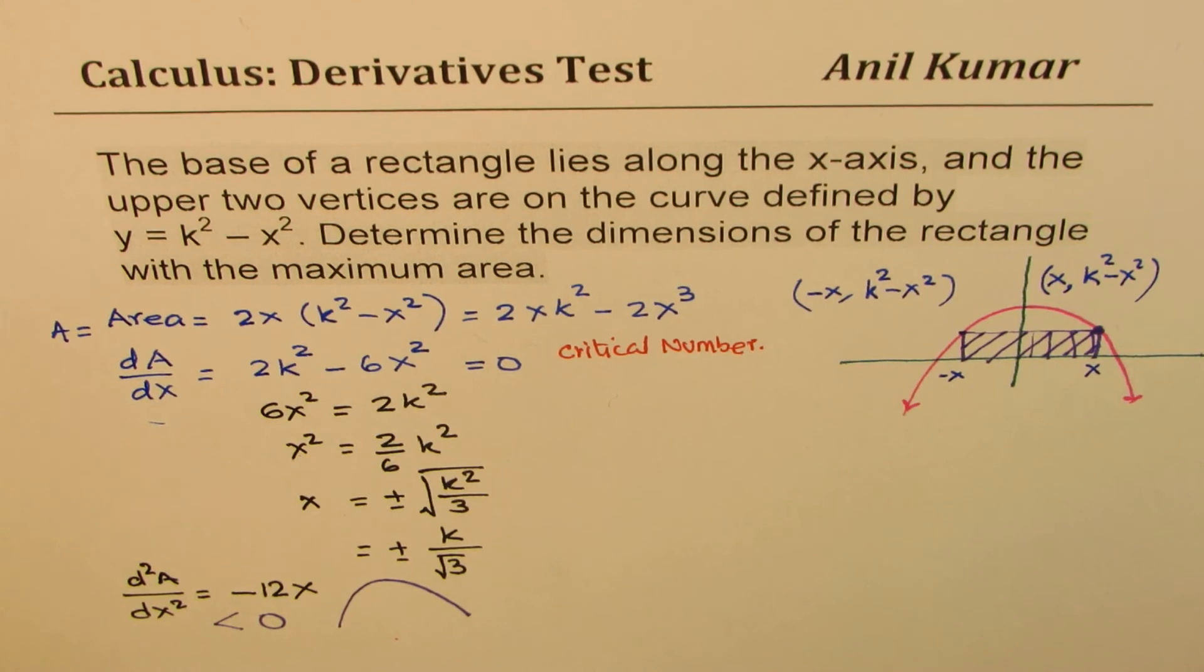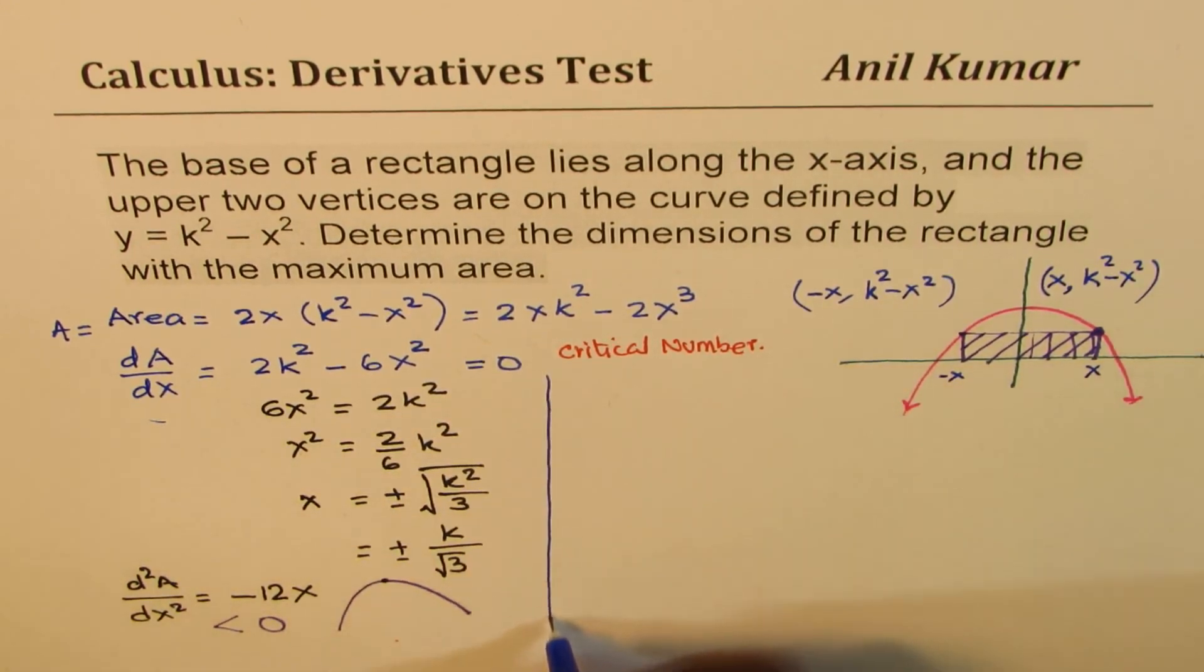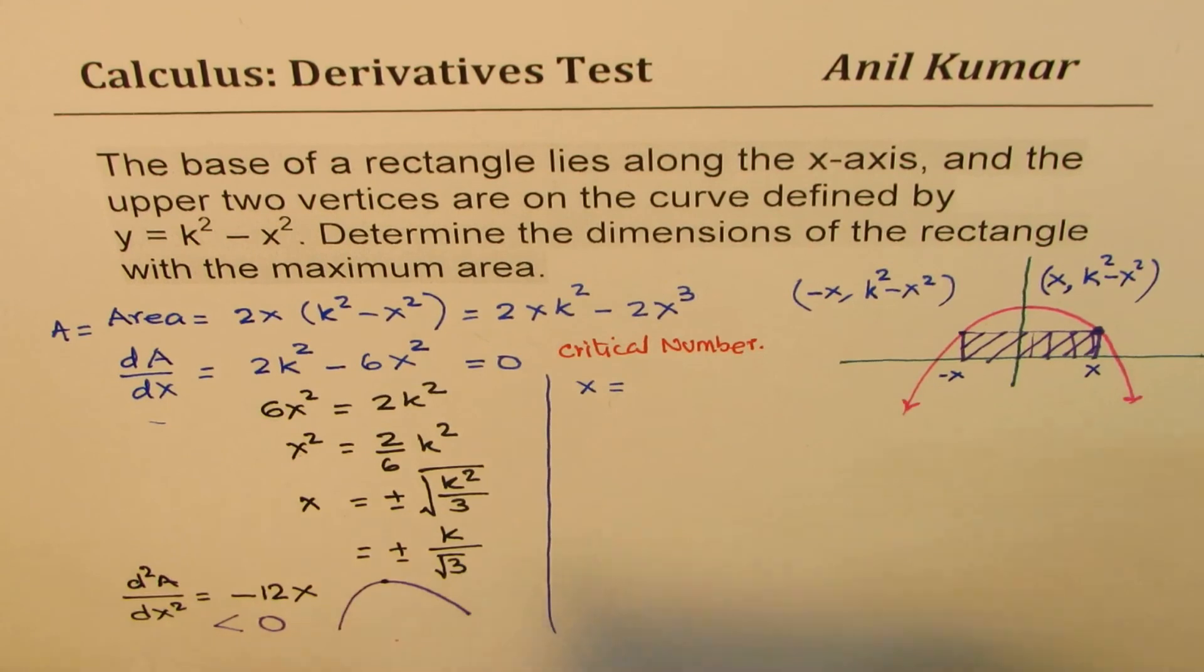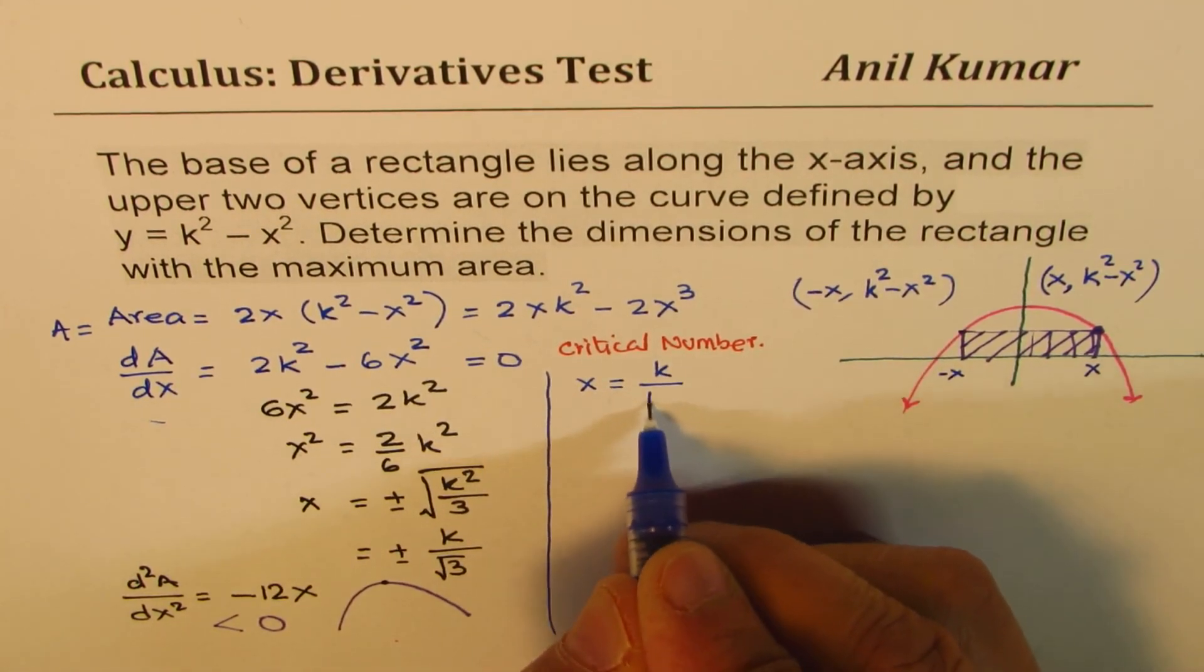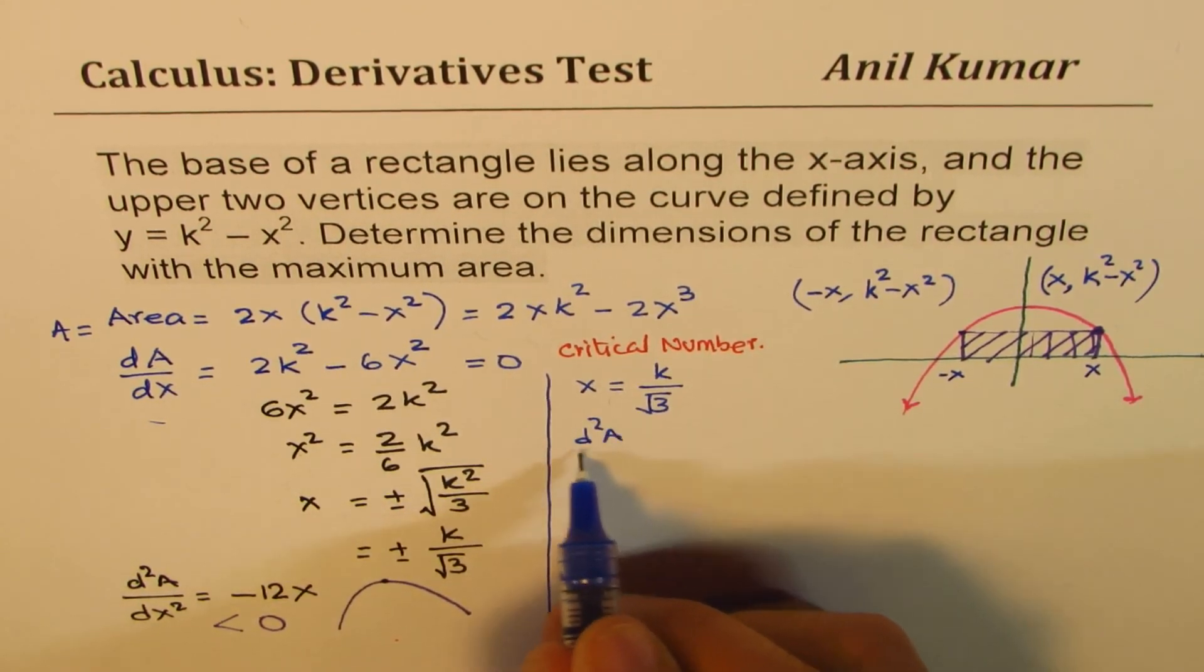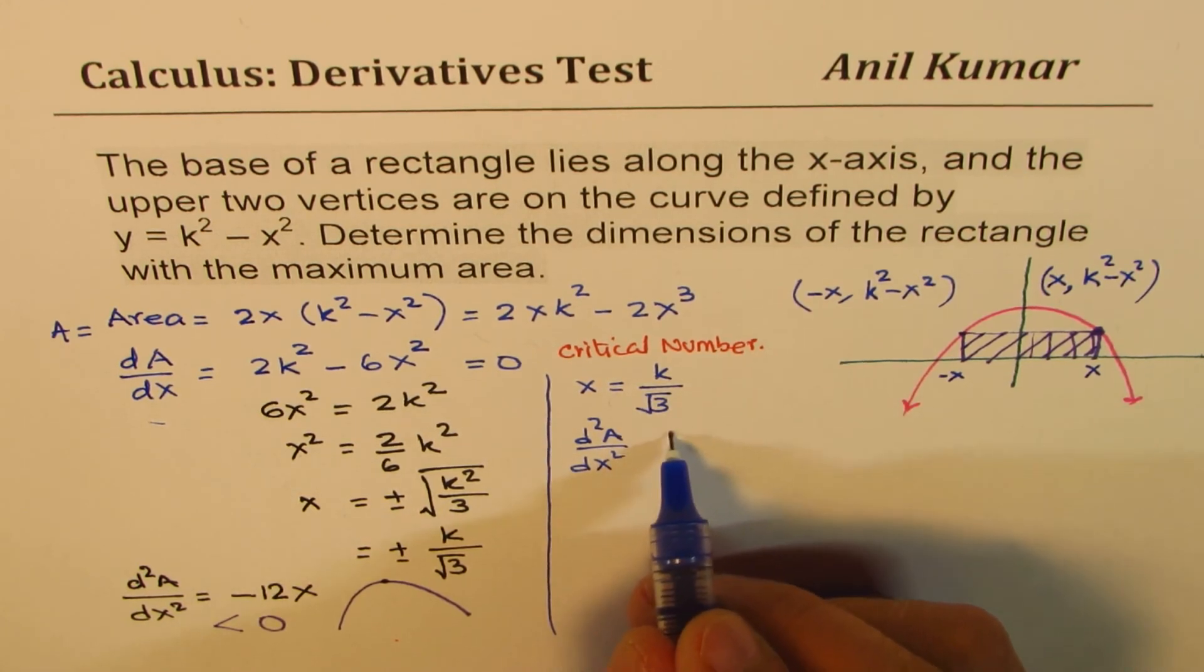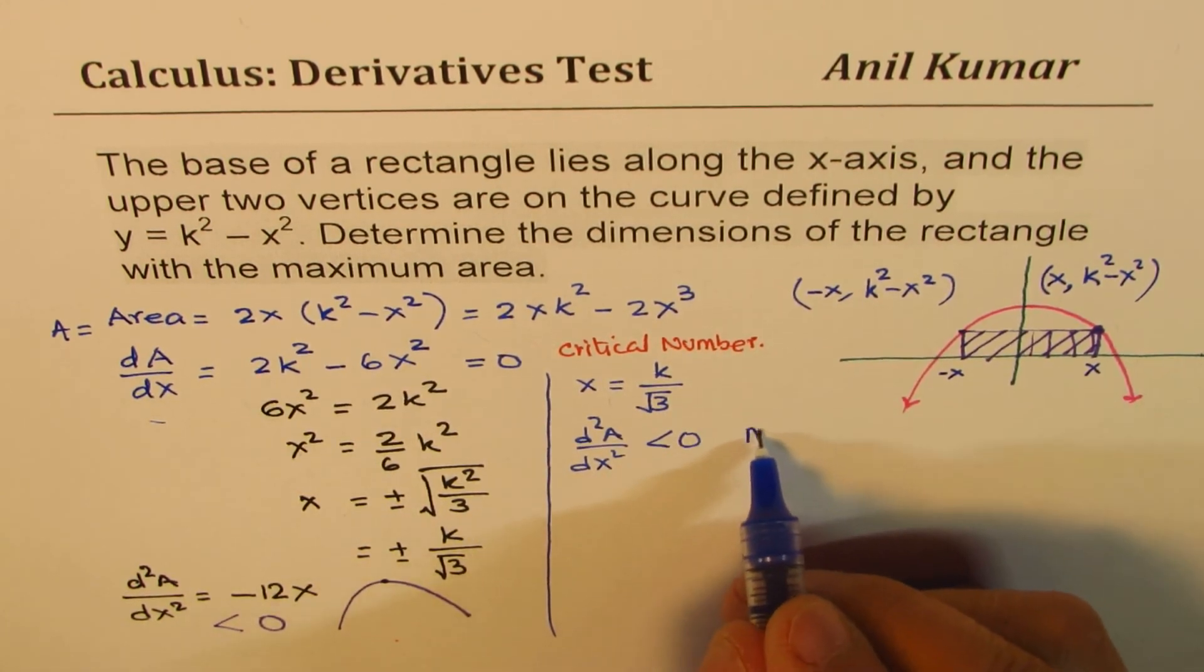So in that case, what do you expect? If it is concave down, we expect a maximum at the critical number. So the critical number, let's consider the value as positive. So for x equals k over square root of 3, we are taking k as positive. If that is the value, in that case, the second derivative, d2A over dx squared, for positive value will be less than 0. So we'll have maximum. So that point on the right-hand side will maximize the area, correct?